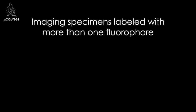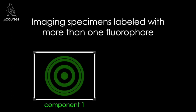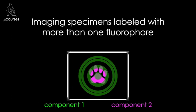Chromatic shifts are of particular concern when imaging more than one color or wavelength, as is the case when using fluorescence microscopy techniques to image specimens labeled with more than one fluorophore. For example, two components in the specimen are labeled with different fluorophores. Images of each fluorophore are acquired sequentially and then merged together computationally to demonstrate the relative localization of the two components.